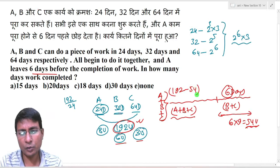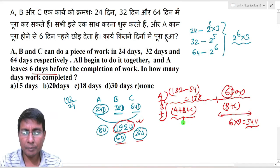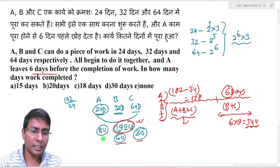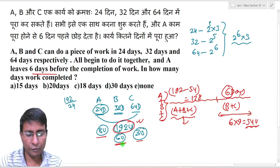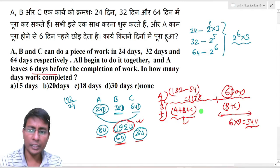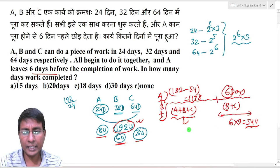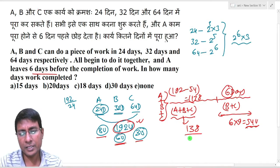The remaining work done earlier by A, B, and C together = 192 − 54 = 138 units. The combined efficiency of A, B, and C is 8 + 6 + 3 = 17 units per day. So the total days needed for this portion = 138 ÷ 17.